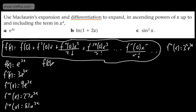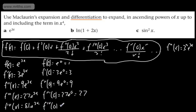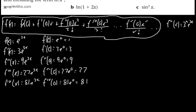Now what we need to do is evaluate at 0. f(0) = e^0 = 1. f'(0) = 3e^0 = 3. f''(0) = 9e^0 = 9. The third derivative at 0 gives us 27e^0 = 27. And the fourth derivative gives us 81e^0 = 81.